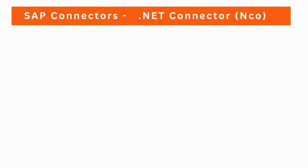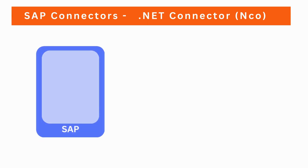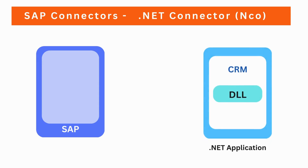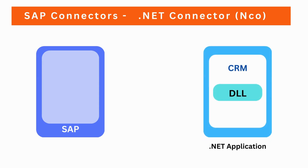Let's take an example for the .NET connector. You have an SAP application that is running some manufacturing processes, and you also have a CRM application that is running on the .NET framework. To integrate the CRM application with your SAP system, you can use the .NET connector to load the customer data into the SAP system.